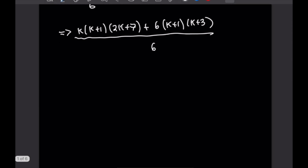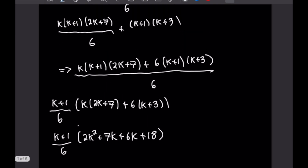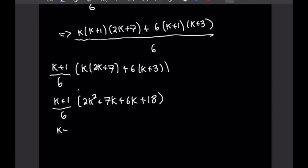Now we're going to factor out k plus 1 over 6, which is common to both terms, and we'll be left with k plus 1 over 6 times k times 2k plus 7 plus 6 times k plus 3. Multiplying that out gives us k plus 1 over 6 times 2k squared plus 7k plus 6k plus 18. Combining like terms we have k plus 1 over 6 times 2k squared plus 13k plus 18.